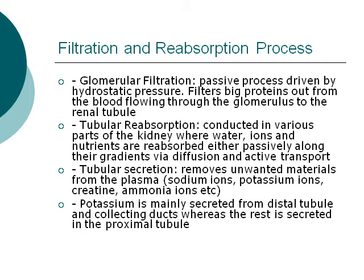Filtration and reabsorption processes. There are three major kinds of processes in this category for the excretory system. The first one is glomerular filtration. It is the passive process driven by hydrostatic pressure. Glomerular filtration filters big proteins out from the blood flowing through the glomerulus to the renal tubule. Tubular reabsorption is conducted in various parts of the kidney where water, ions, and nutrients are reabsorbed either passively along their gradients via diffusion or by active transport.